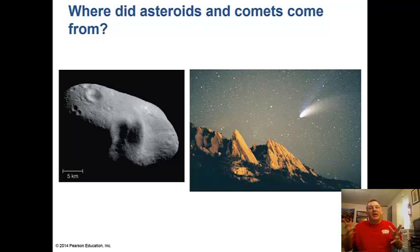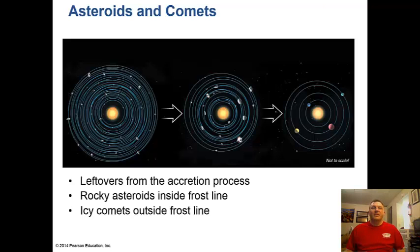Then we have other stuff in the solar system - the leftover junk, the asteroids and comets. Where did they come from? The leftovers from the accretion process. Rocky asteroids were inside the frost line, and icy comets were outside the frost line. The asteroids tend to be between Mars and Jupiter, and the comets mainly outside Neptune's orbit.